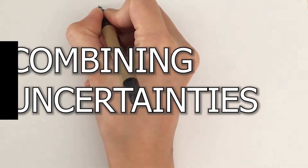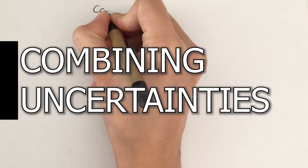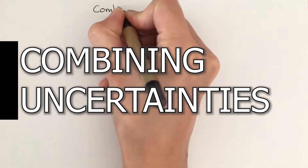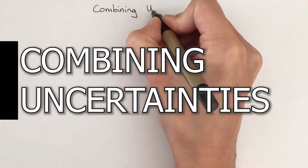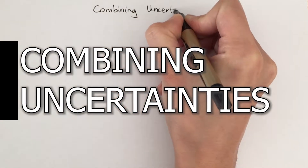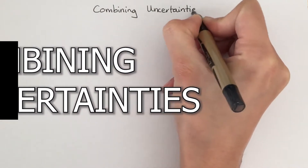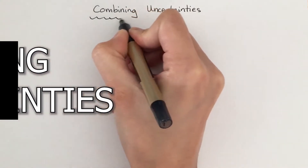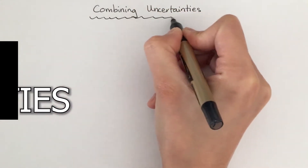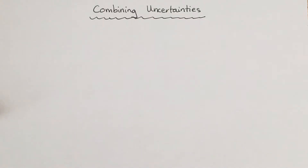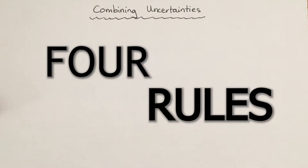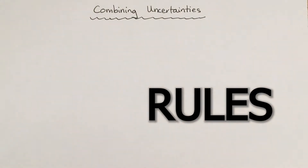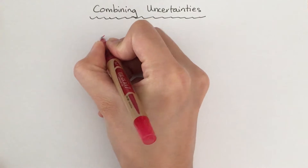There are times when you work with your measured data and you realize that you have to add it to another measurement that has an uncertainty, or maybe you need to scale it up by a factor of 2, or raise it to a power of 5. This is when you need to know how to combine uncertainties. In this video, I'm going to show you some of the rules you need to follow when combining these uncertainties.